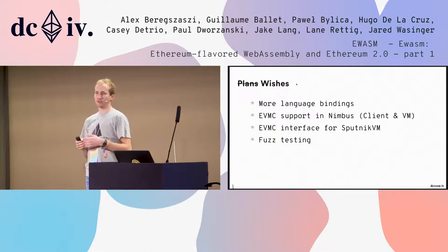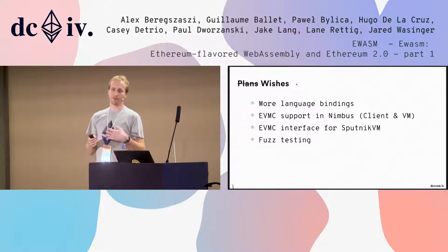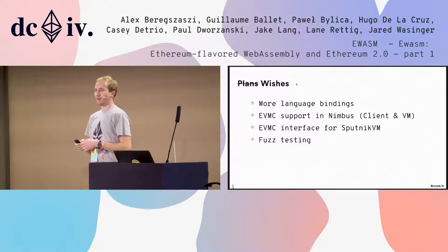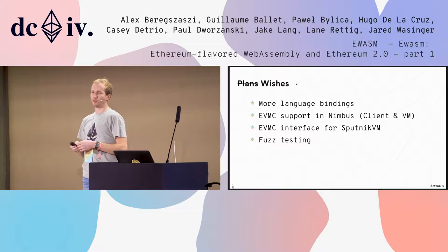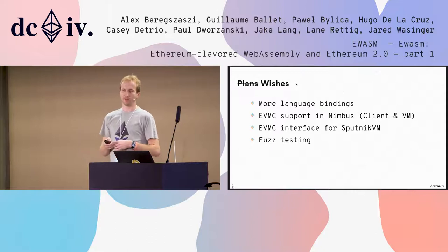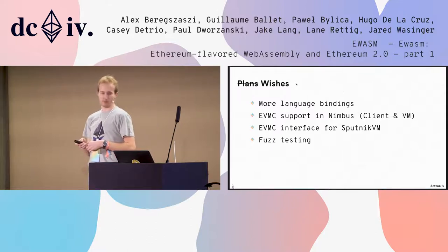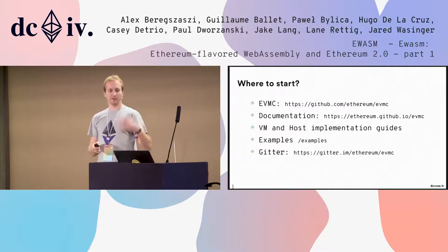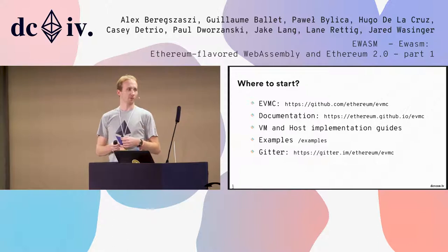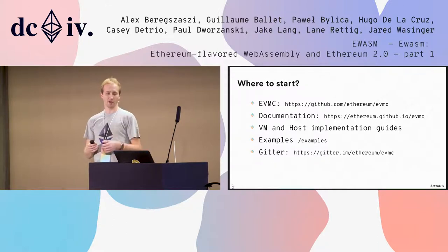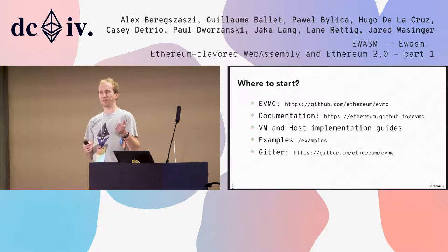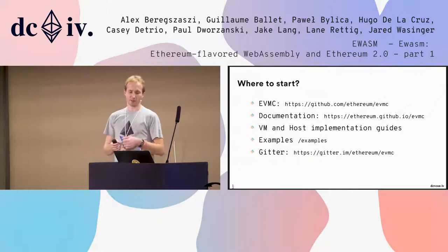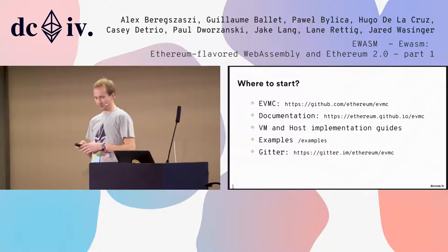Currently, Aleth — the C++ Ethereum client — and Geth via a submitted pull request both support EVMC. On the VM side, Aleth Interpreter (part of the Aleth project) and Hera both support it. There is a node using the Geth plus Aleth Interpreter combination that is fully production-ready and can be used on mainnet. We're using the Geth and Hera combination to run the eWASM testnet. If you'd like to bring this support to your project or need other language bindings, please express those needs and we're happy to help.